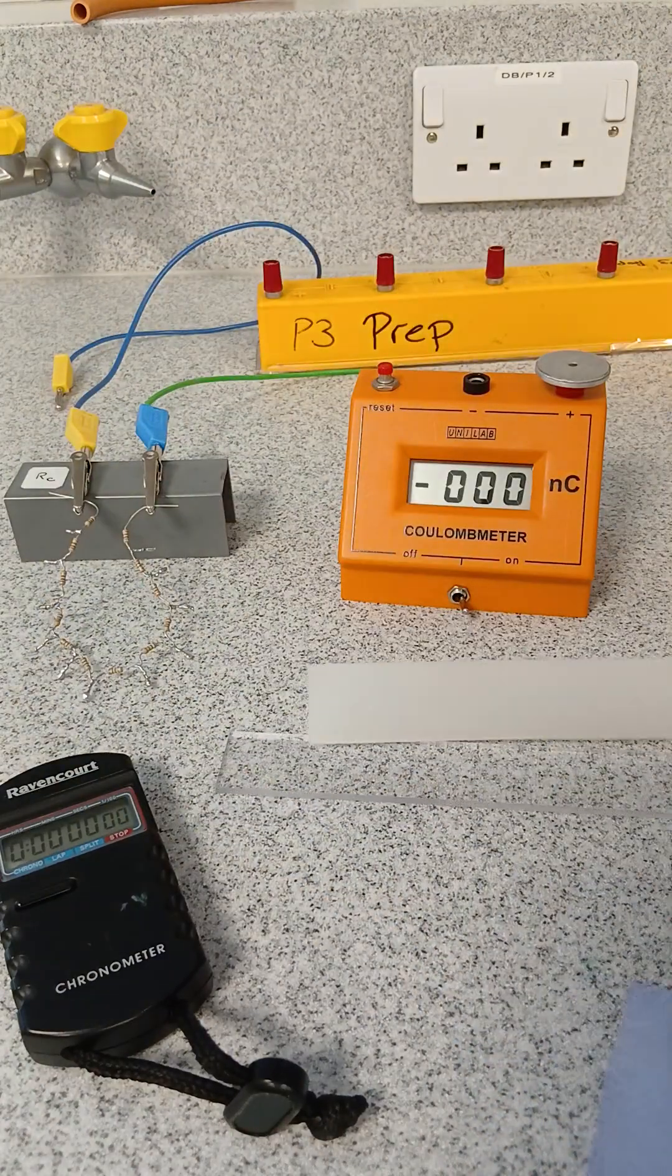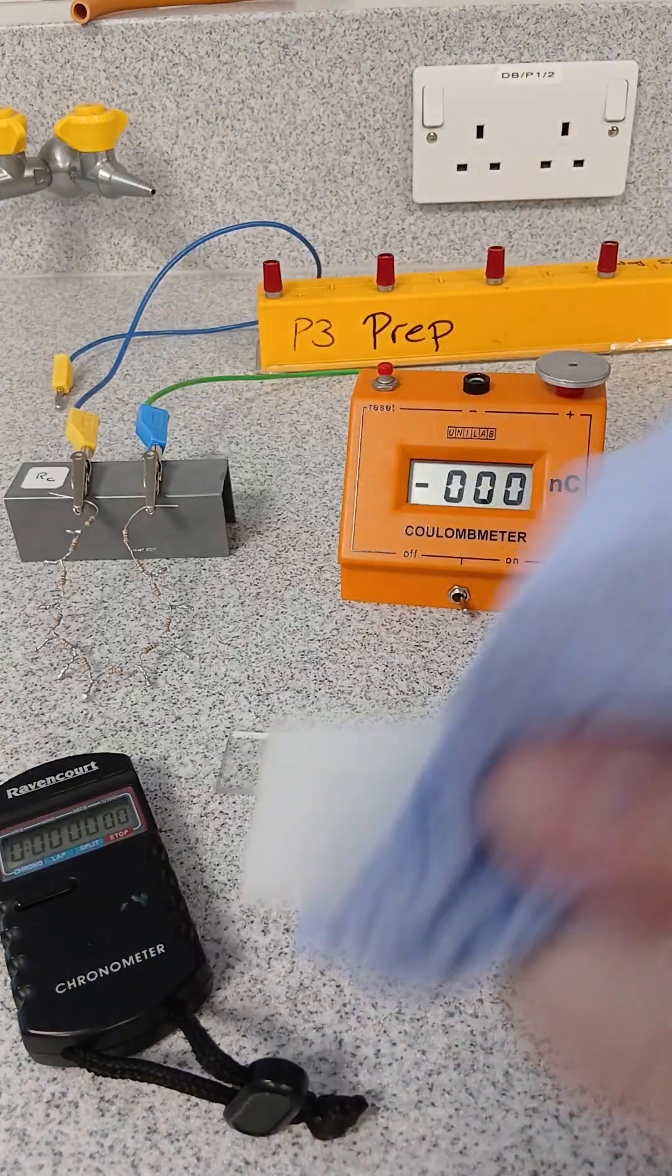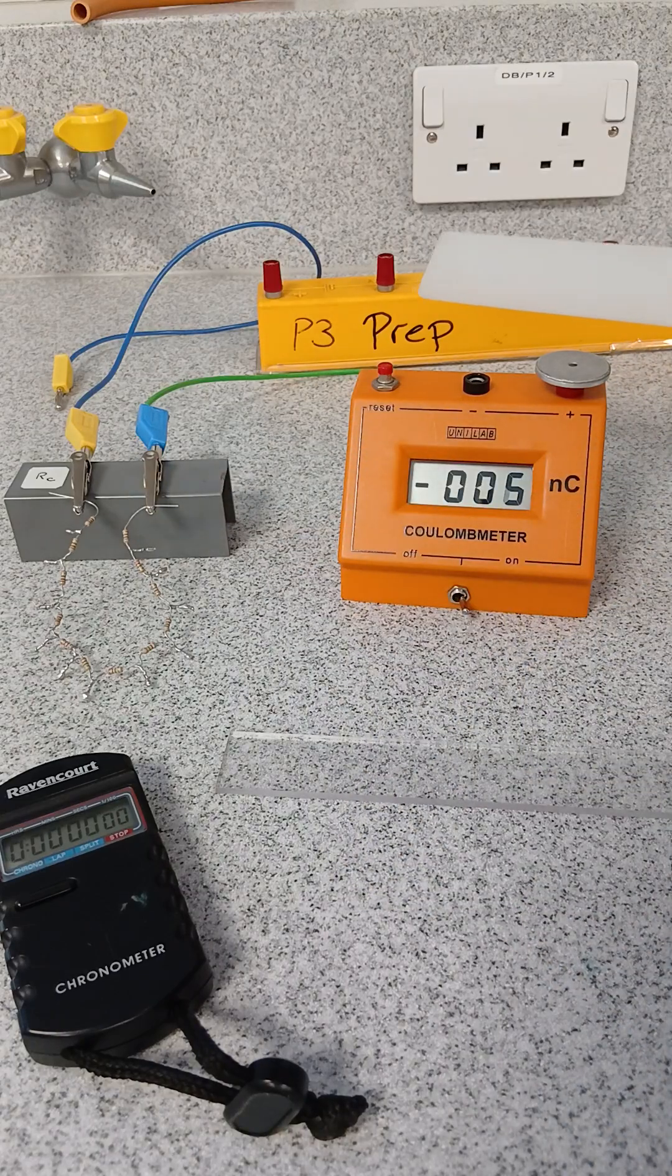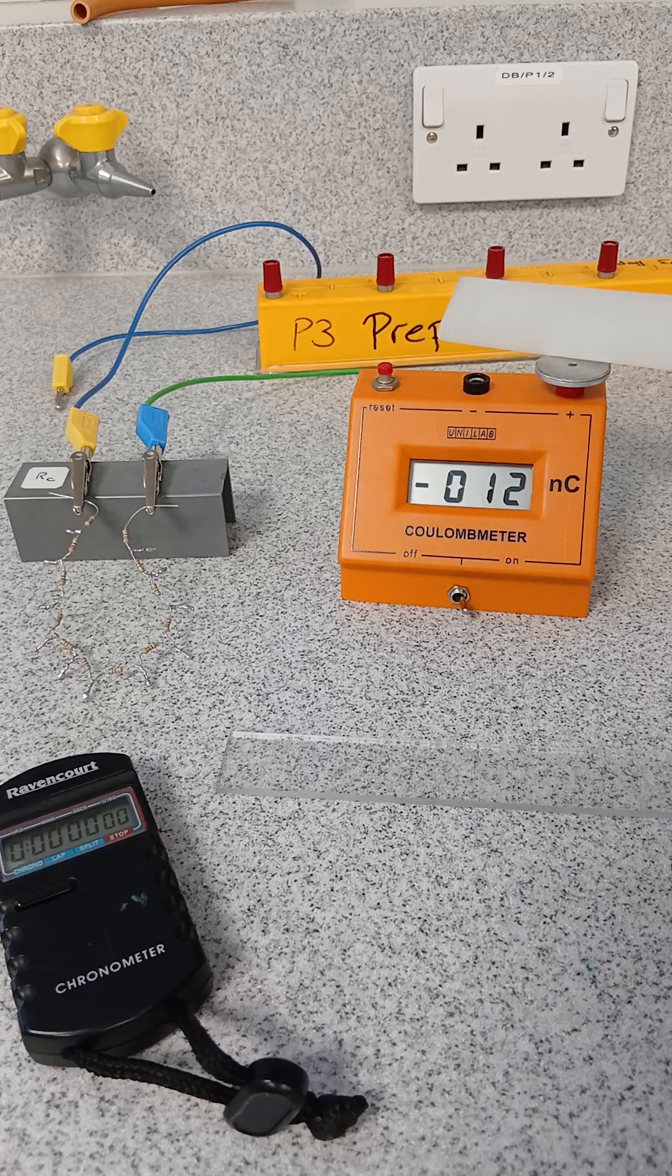So you're probably used to taking a cloth and rubbing a rod, in this case polythene, with the cloth. And then you're getting negative buildup of charge there.